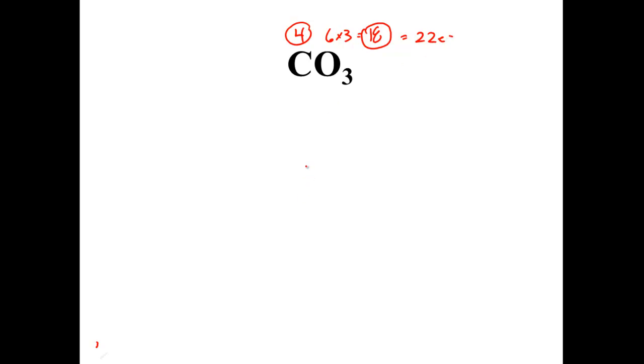The next step in the process is to draw what I call a skeleton structure. This is just a really thin and basic skeleton structure, only showing the elements arranged around the element that needs the most electrons. Carbon needs the most electrons, therefore it goes in the middle.